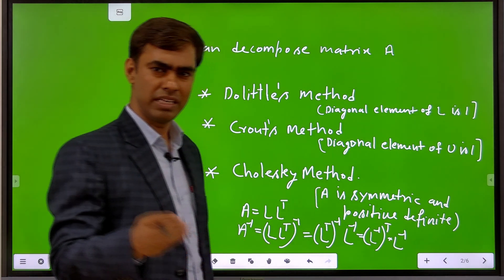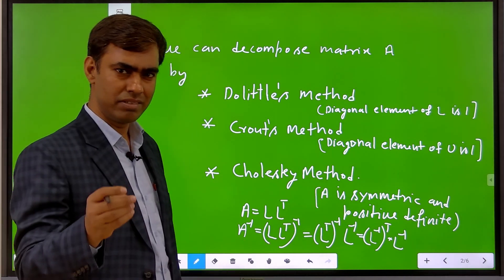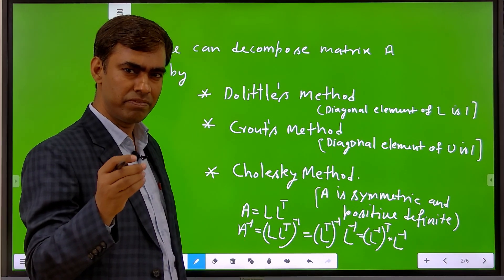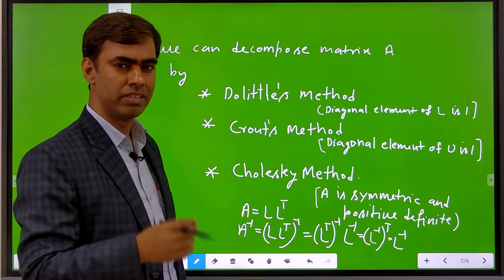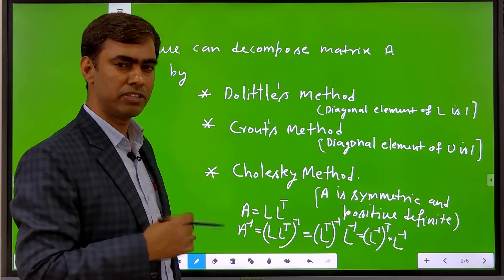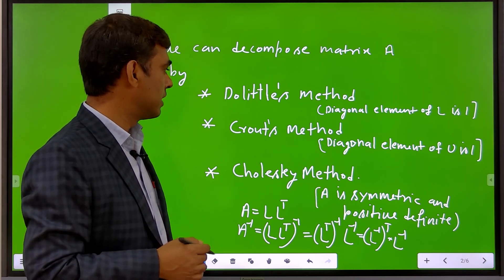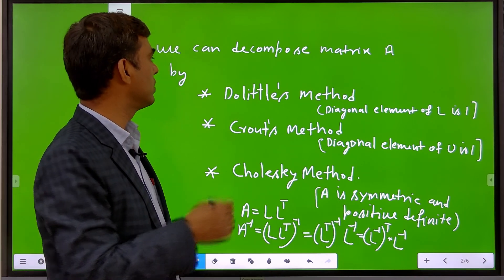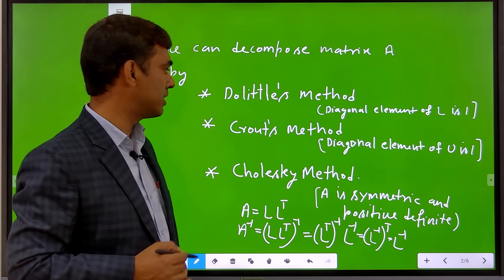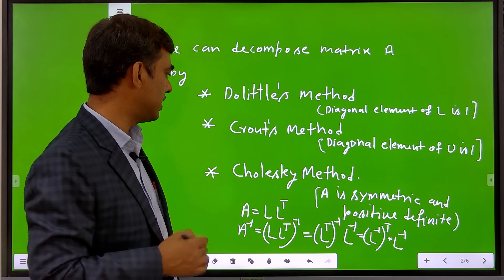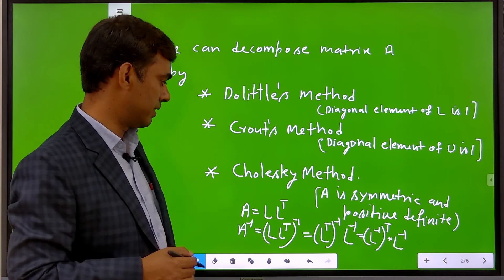This has been a brief description of how we find the inverse using Doolittle's method, Crout's method, and Cholesky's method.